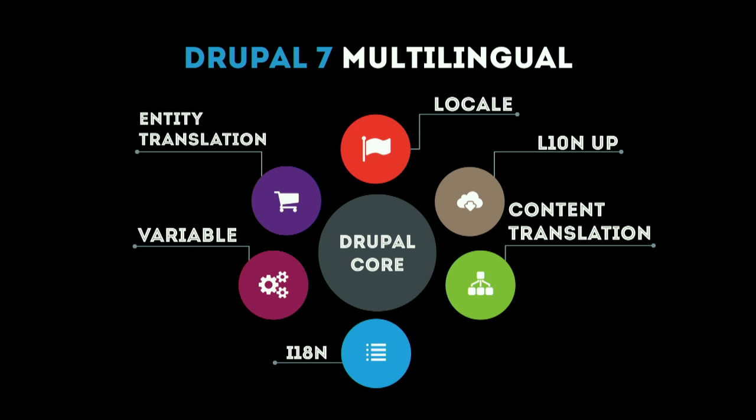You had multiple solutions for translating the same content. You could translate nodes with content translation or entity translation; taxonomies with the i18n suite or entity translation. There were a lot of options, and at the end you could mix them all, which could be quite confusing and made your site harder to manage. This is something we wanted to solve in Drupal 8.